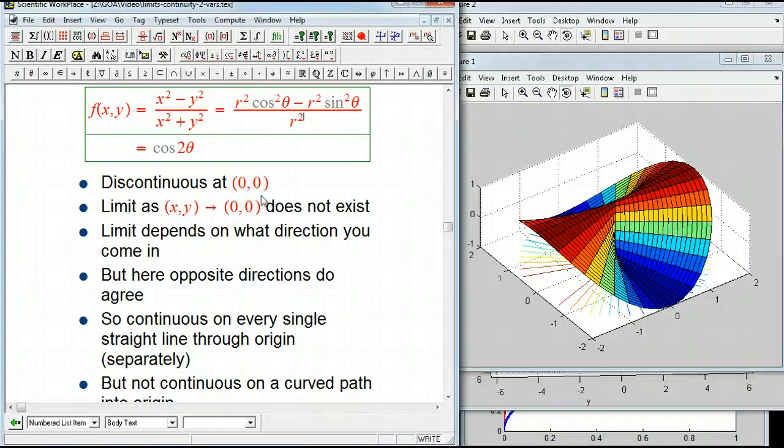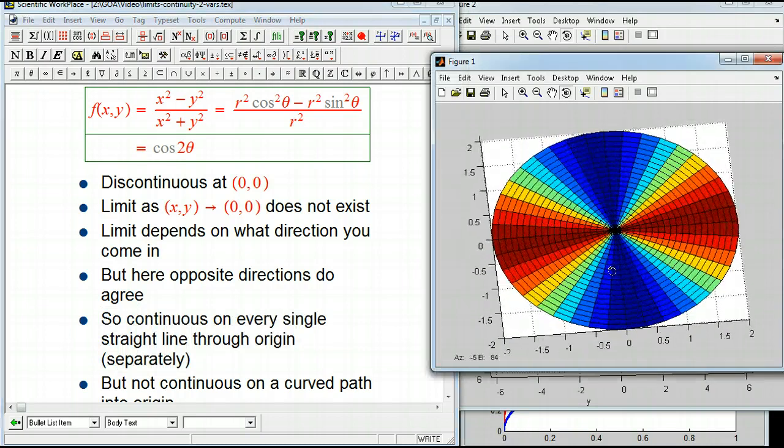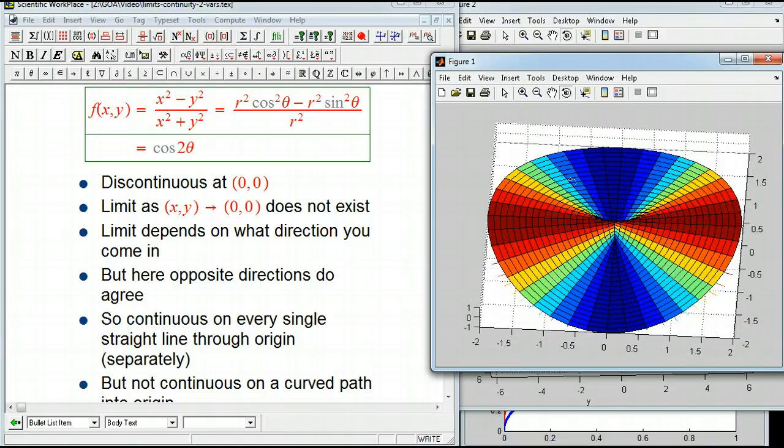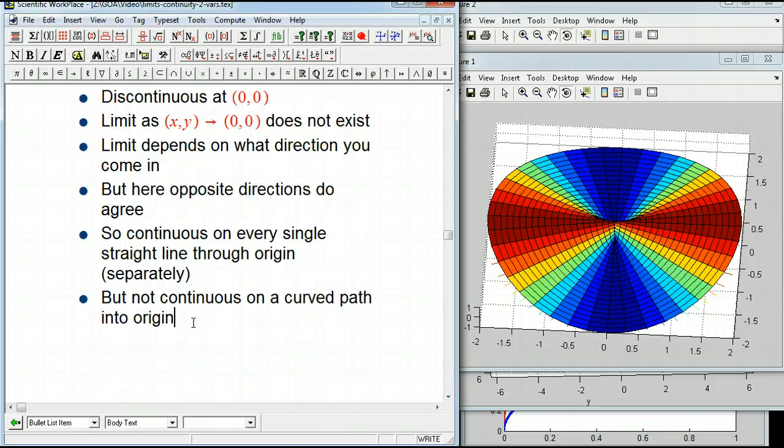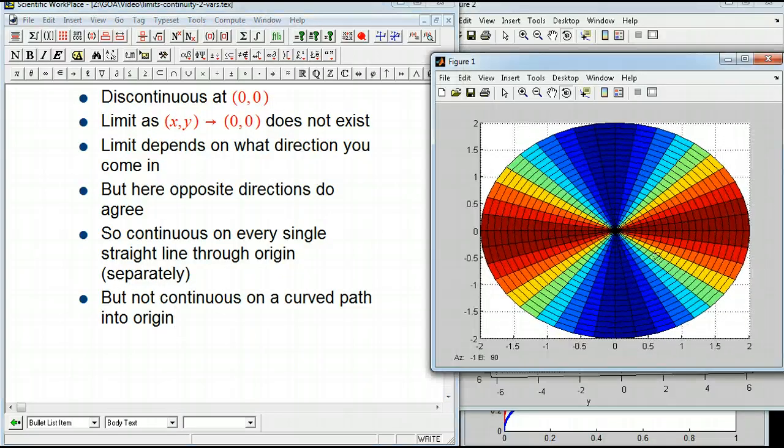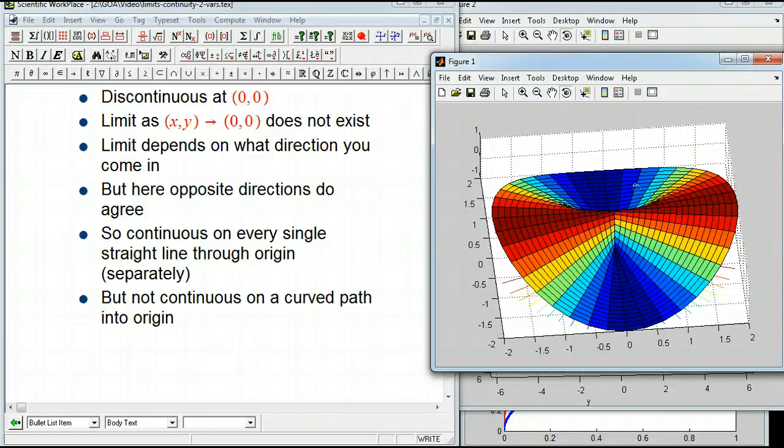So here, it's discontinuous at the origin. The limit does not exist because the limit depends on which direction you come in. Here, you could be a little misled here. You could say, oh, if I pick any particular line, y equals x or y equals 2x or x equals 3y or something like that, any line that goes to the origin, then that's going to pick out one of these colors. It's going to be continuous on that line. It's going to be continuous on every single line separately. But they all give different answers. That's not continuous. One interesting thing here, of course, is that going in on straight lines, as I said, is just not enough.